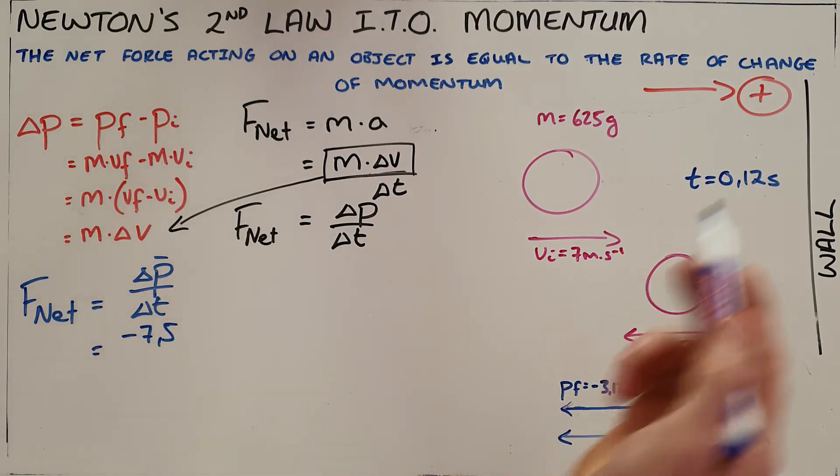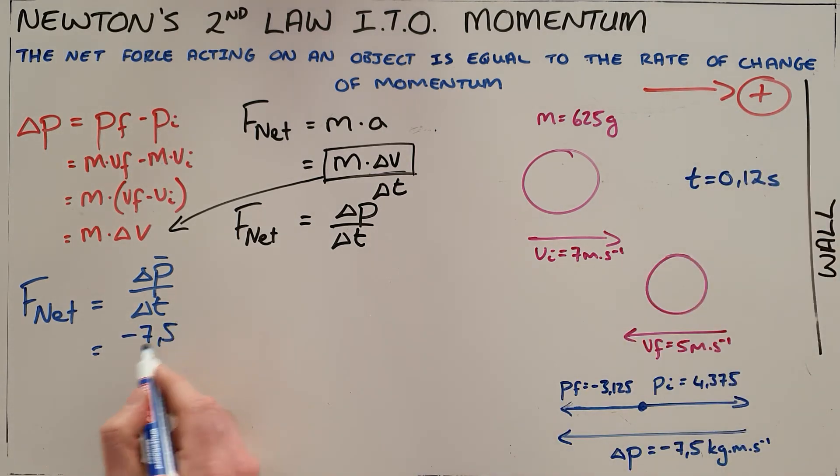Again, the momentum changes in the opposite direction to our positive direction, divided by the change in time which was given to us, and we find a net force of negative 62.5. We know that forces are measured in newtons.